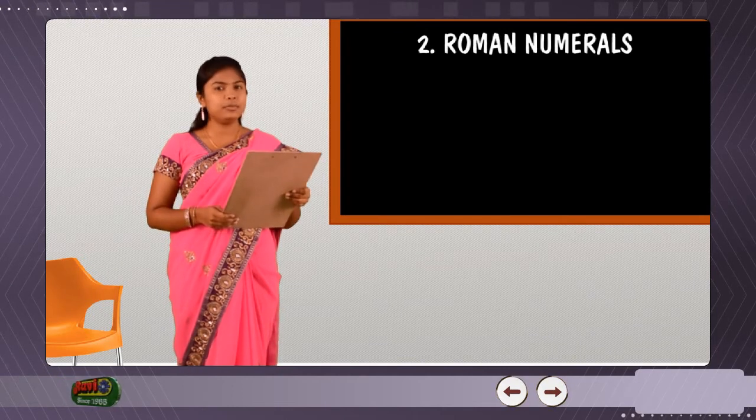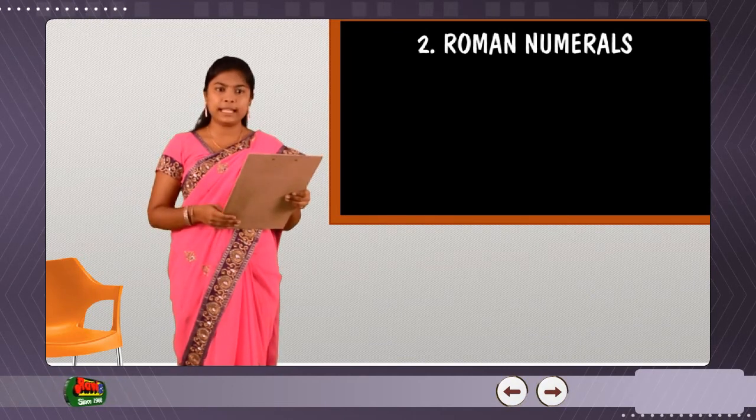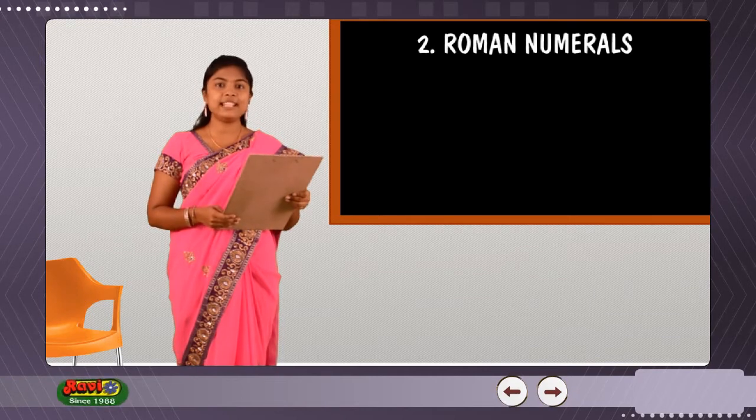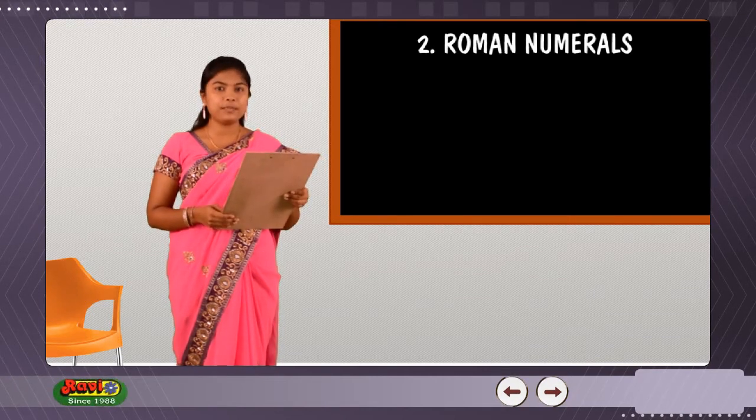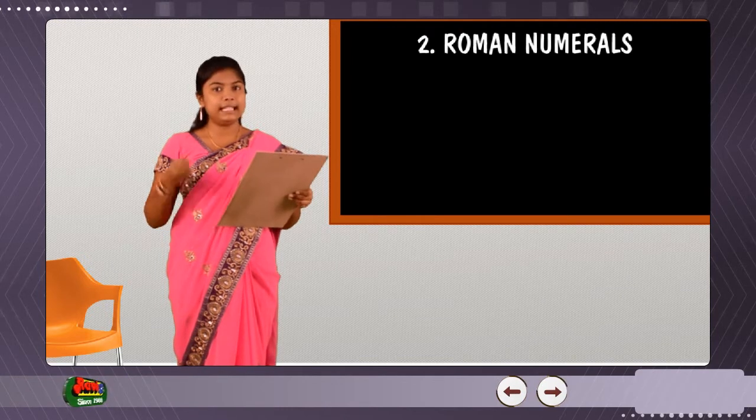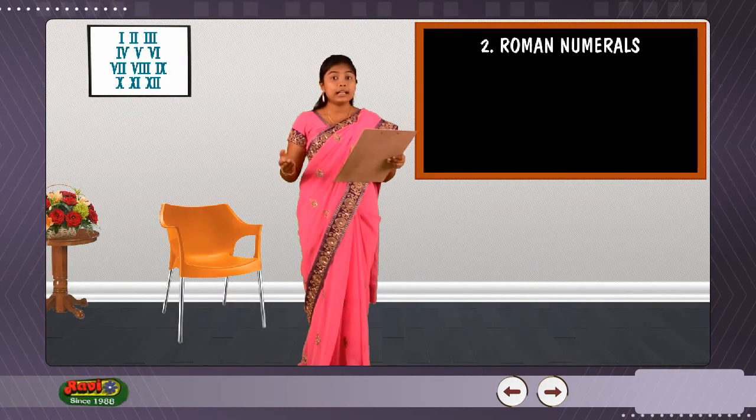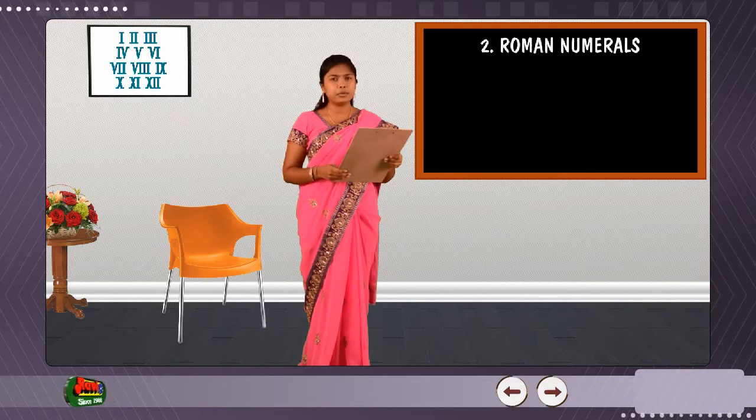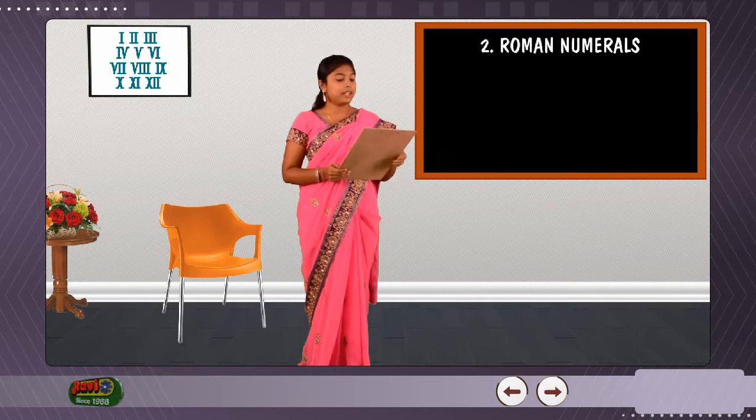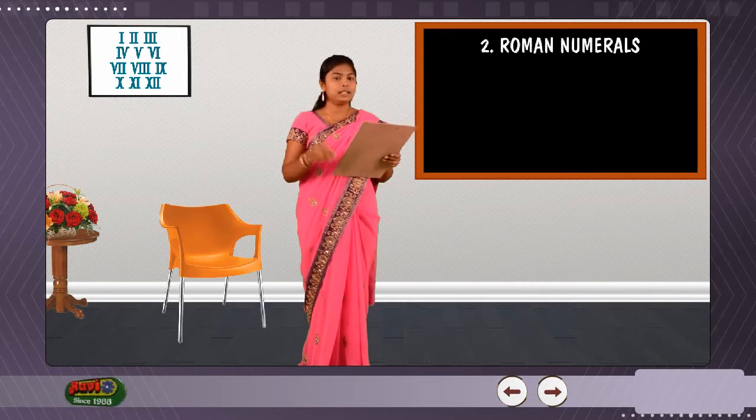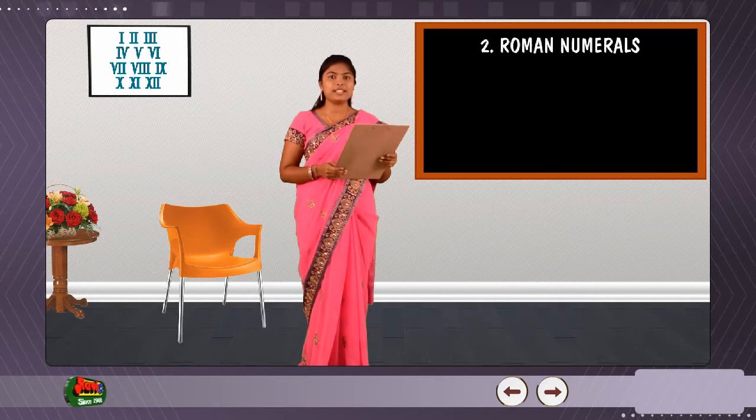Roman numerals as used today are based on seven symbols. Roman numeral system provided for easy addition and subtraction. Other arithmetic operations proved more difficult. In this chapter, you will learn about the Roman numerals.